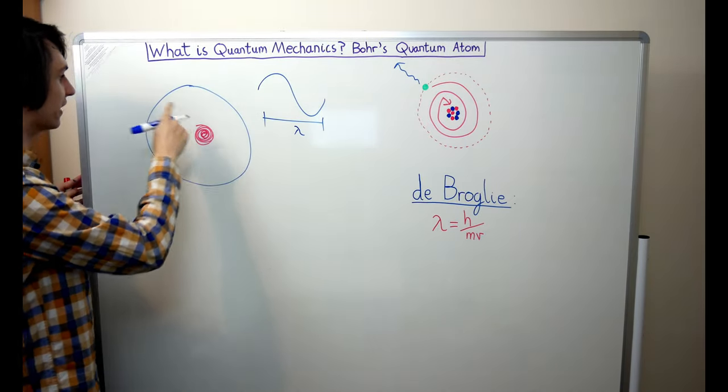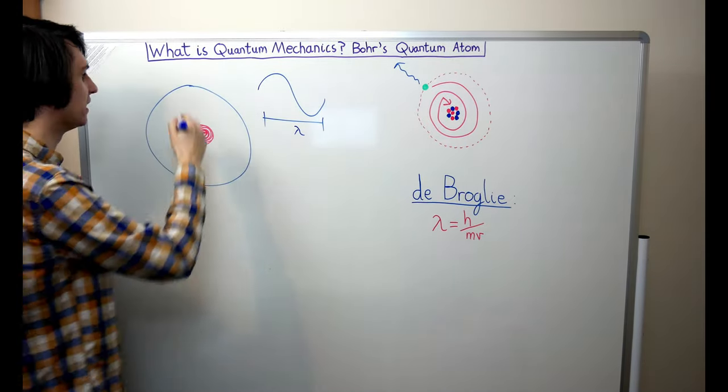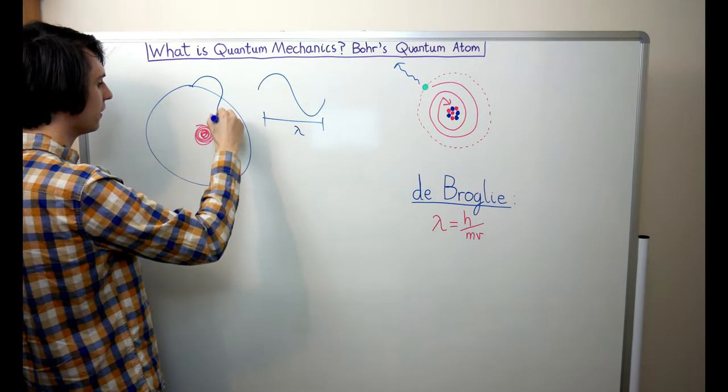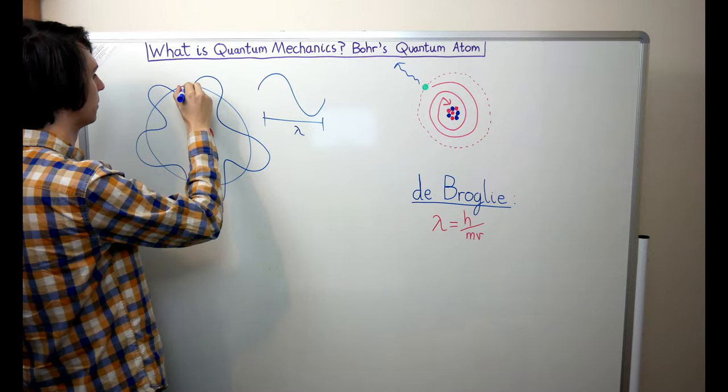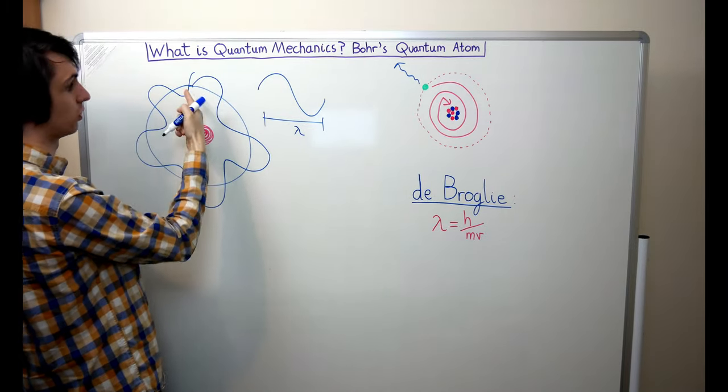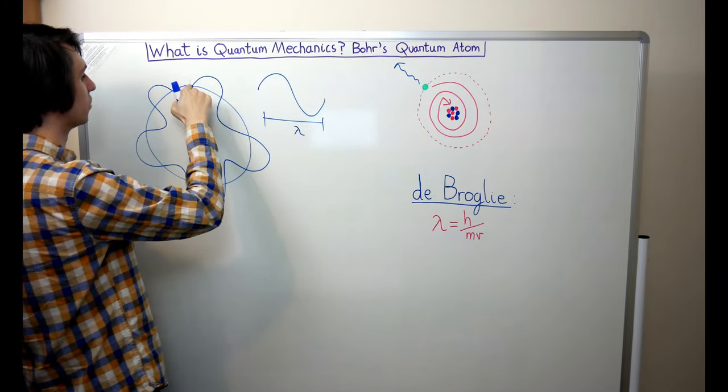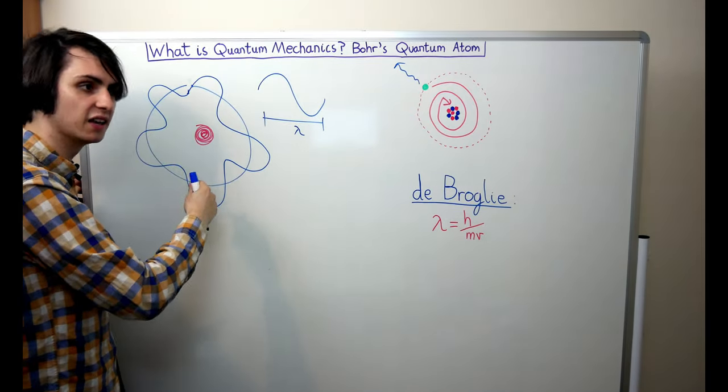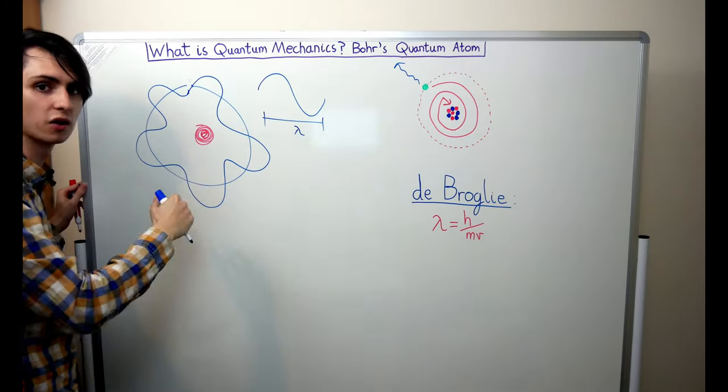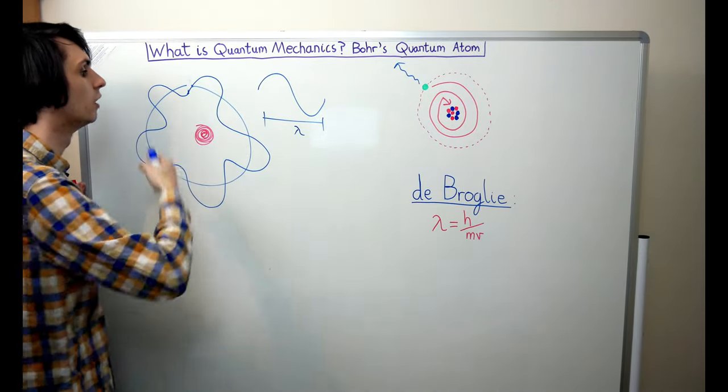Now we can represent the electron in its orbit as a wave, but what we need to be careful of is that the endpoints of this wave match up, otherwise we could get a discontinuity. So we need to make sure that these endpoints match up, and the condition for this to be the case is that the circumference of this circle is an integer multiple of the wavelength.